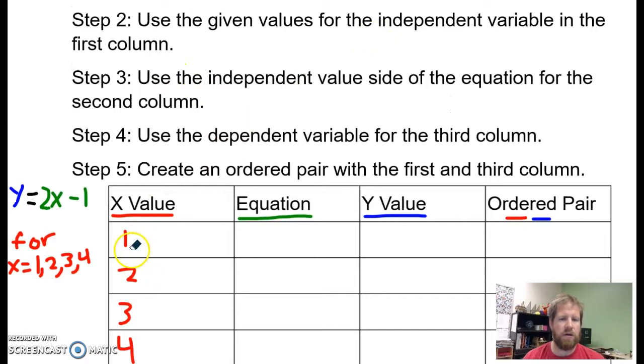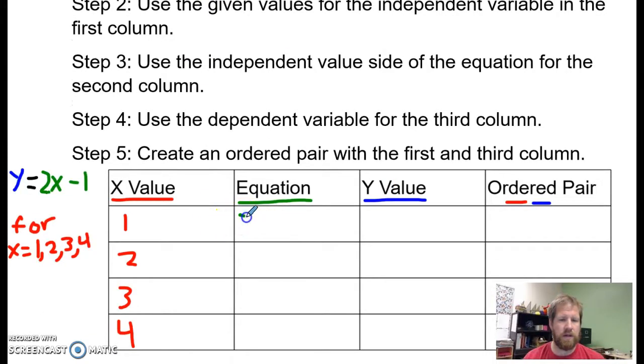Second is I'm going to use these values and the equation, so this green part, to figure out my dependent variable value. So I'm going to come in here and say, I've got two times x, but in this case my x is one. So two times one minus one, two times one is two, minus one is one. So when my x value is one, my y value is one.